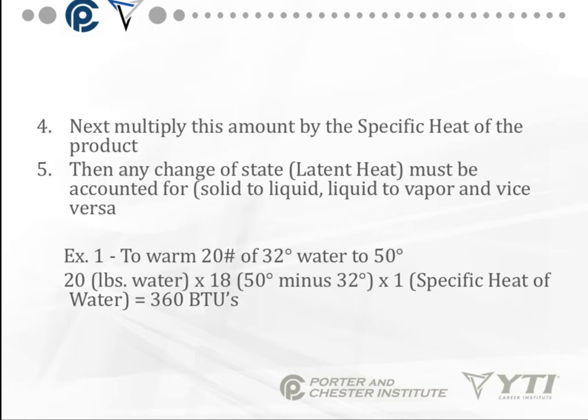The first example: if I want to warm 20 pounds of 32-degree water to 50 degrees, our weight is 20 pounds. Our temperature change, or delta T, is 18 degrees. The specific heat of water is 1. So we multiply 20 times 18 times 1, and that gives us 360 BTUs.